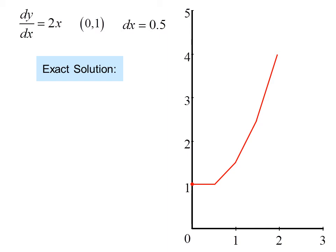The exact solution to this problem can be found this way. We start with dy equals 2x dx. Take the antiderivative and get y equals x squared plus c. Putting in our initial values, we find that c equals 1, so y equals x squared plus 1, which gives us a parabola.